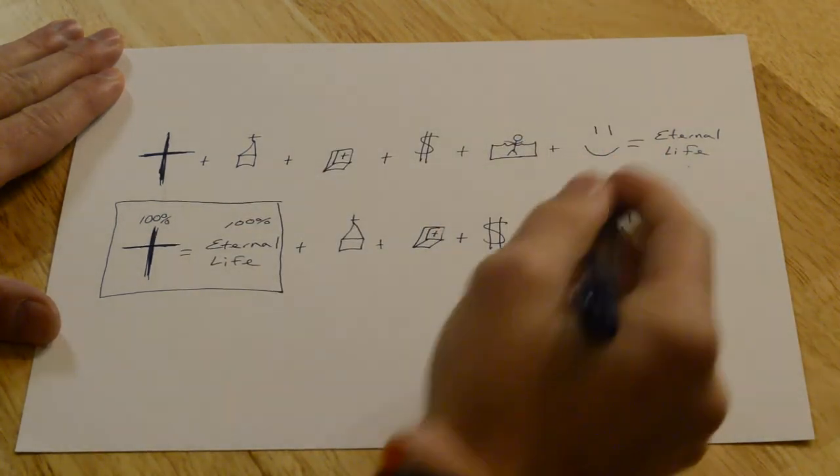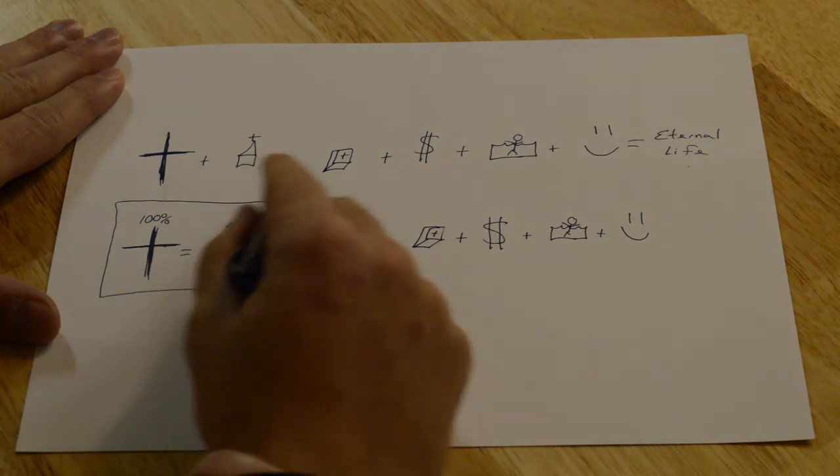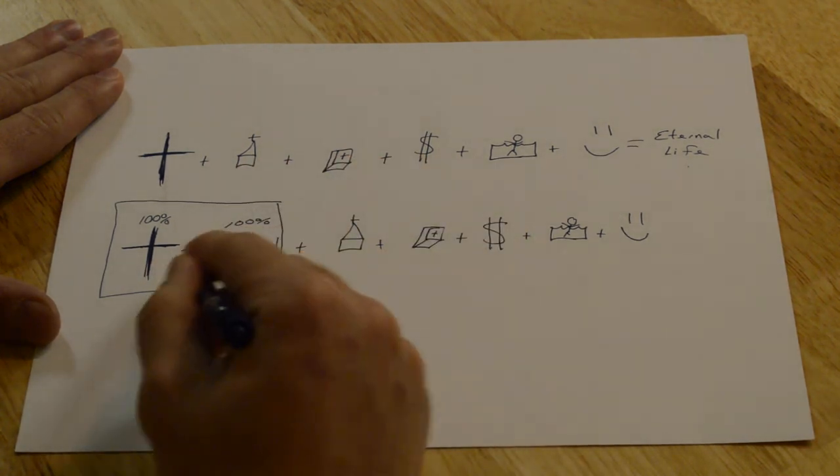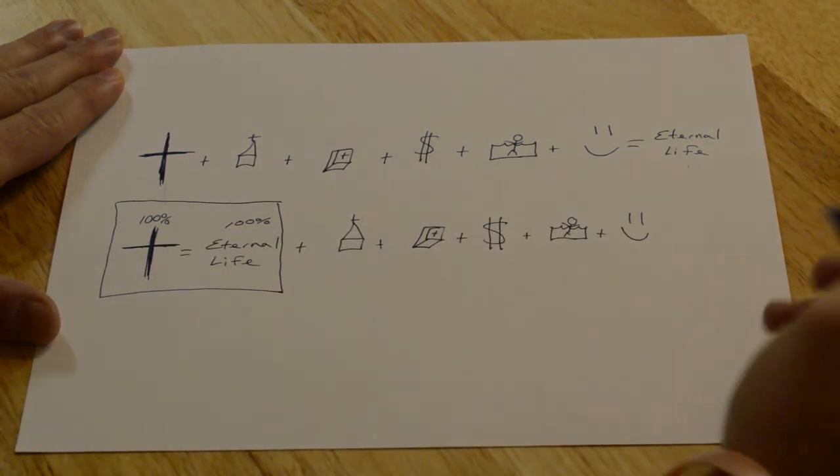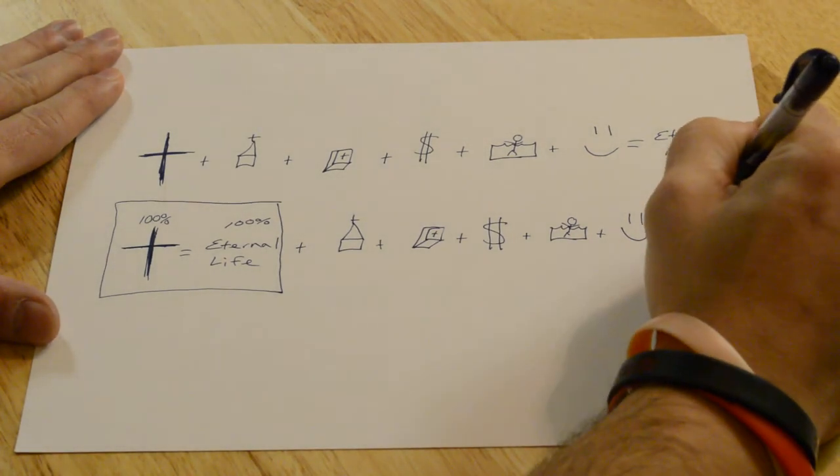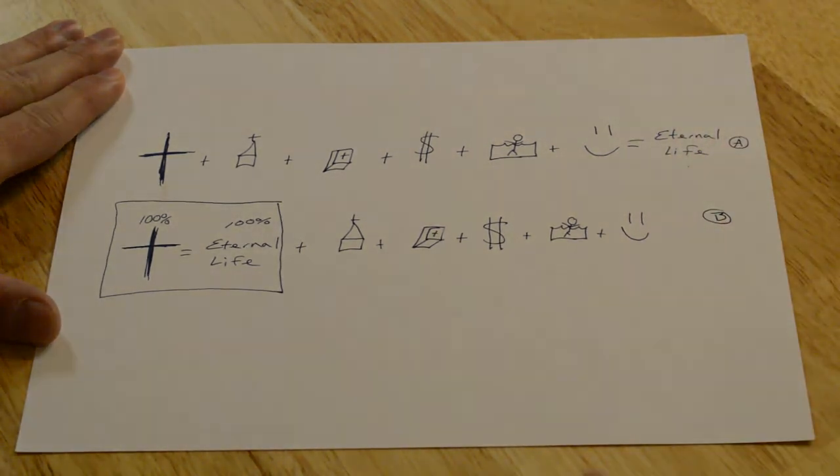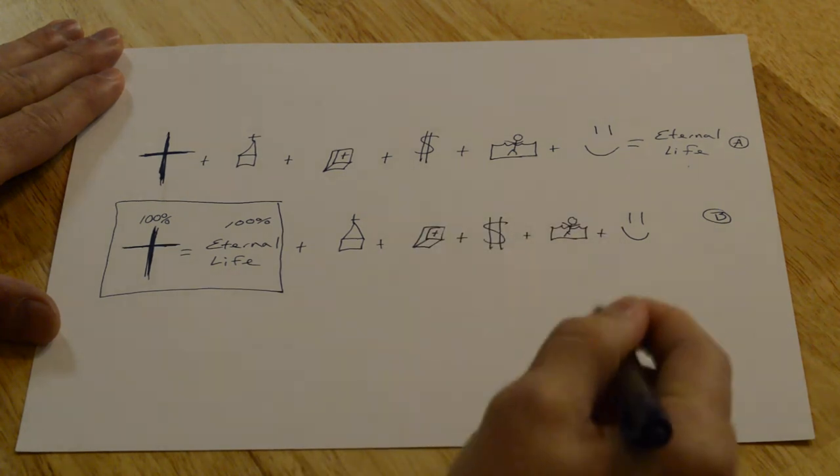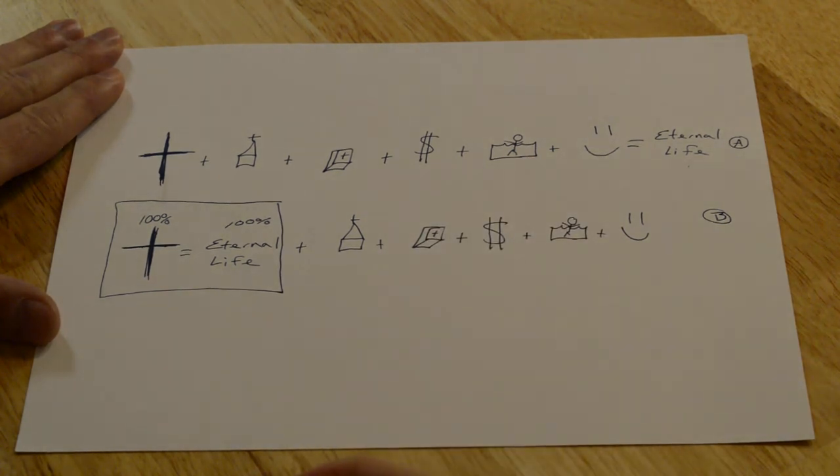So this is what we call the train. What's pulling your eternity? Is it the good things that you've done? Or is it the cross of Jesus Christ? And then we'll ask somebody when we're sharing this with them. This is the A train. This is the B train. Which one of these best defines your life? And we let them answer.